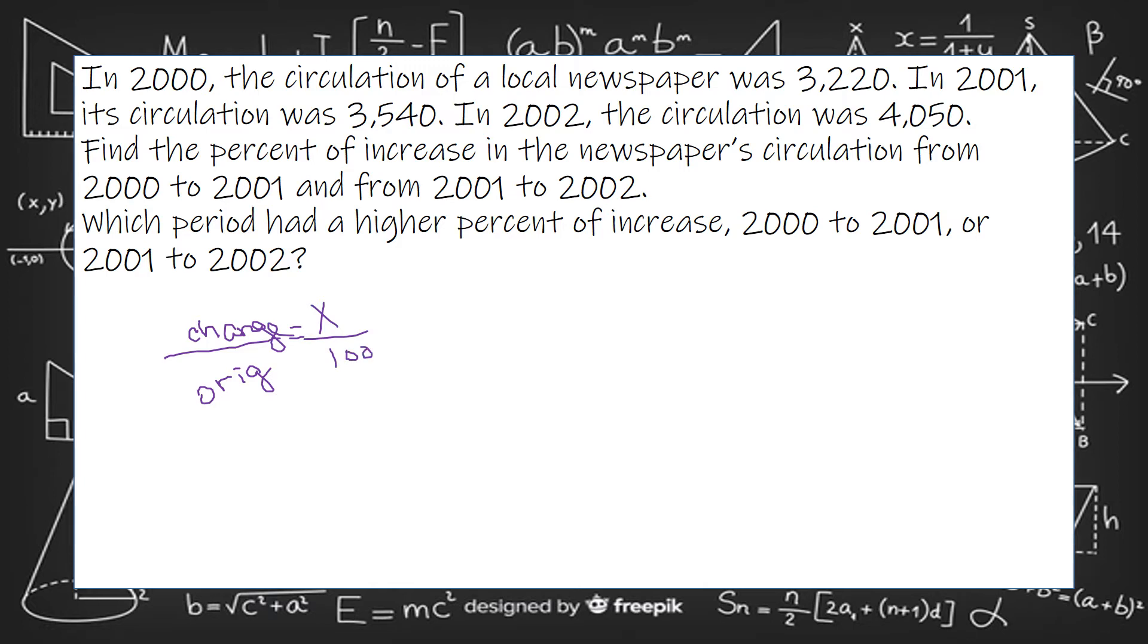So let's look at 2000 to 2001. We've got 3,540 minus 3,220. So that would give us 320. So we're going to put the change over the original.